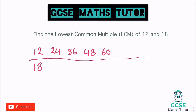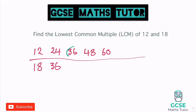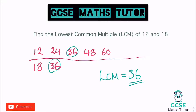Moving on to 18, the next number in the 18 times table is 36. And actually I've just spotted I don't need to go any further, because I've just found the first number that appears in both their times tables. So I'll just make the statement that the lowest common multiple, which we can abbreviate to LCM, is 36. And that's that question done — that's all we're going to do.